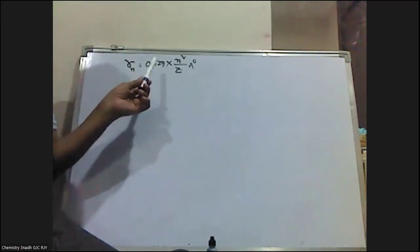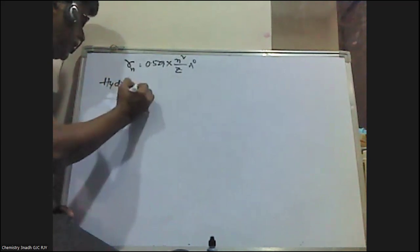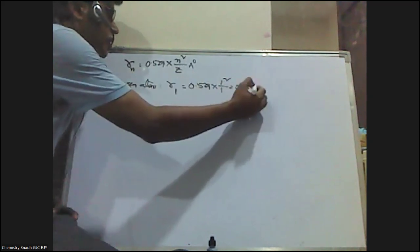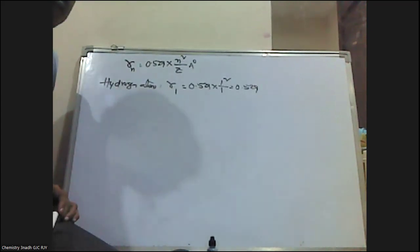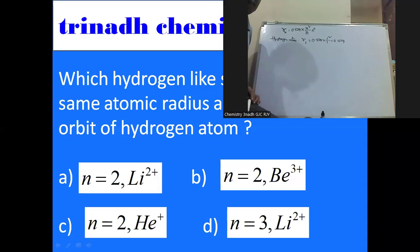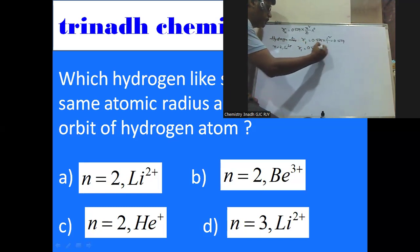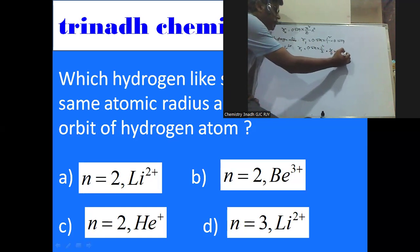To solve this, we know rn = 0.529 × n²/z. For hydrogen atom, the first Bohr orbit is 0.529 × (1²/1) = 0.529 Å. Now, the first option given is n = 2, Li²⁺. For Li²⁺: r = 0.529 × (2²/3) = 0.529 × 4/3. This is not equal to 0.529, so it is not the correct answer.